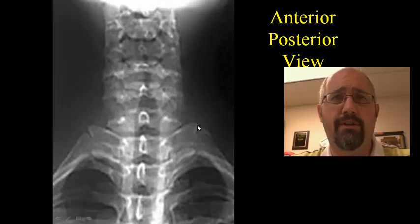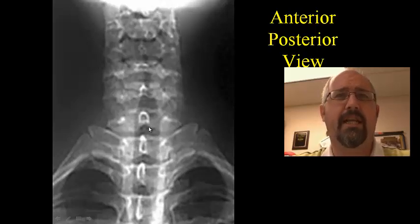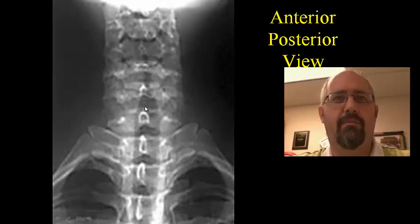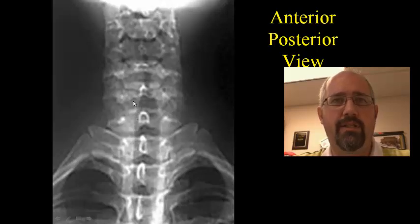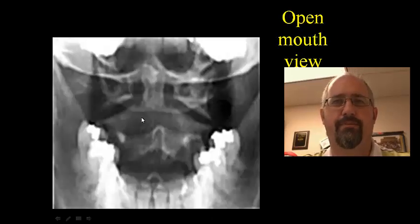Looking from an anterior to posterior view — it's a bit fuzzy, pretty hard to see in some ways — but you can just see the definition between the vertebral segments and where the discs are going to be. We're also looking right at the spinous processes in an end-on sort of positioning.